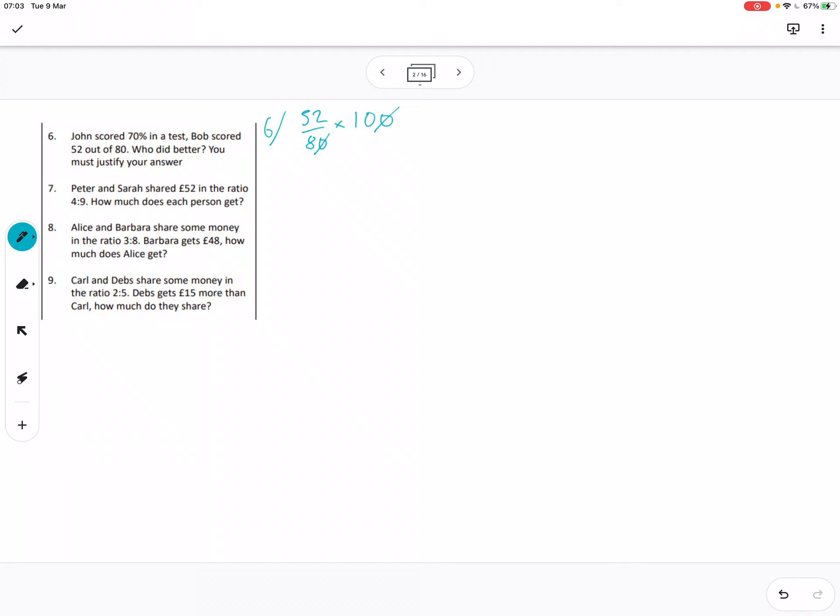So maybe I'll just do some cancelling there. I've got 52 over 8, which is... let's do 520 over 8, 520 over 8, and then I'll divide them both by 2, so 260 over 4. And then divide by 2 again. I mean there's like different ways you could work this out. So 130 over 2, which is 65. So I'd say John did better there. John did better because 70% is more than 65%.